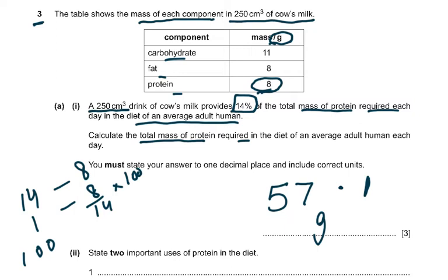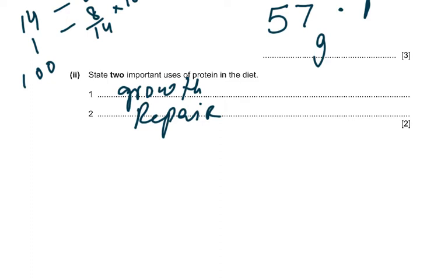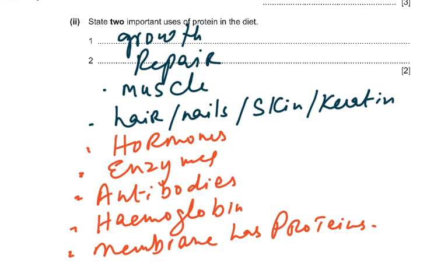State two important uses of protein in the body. There are many: growth, repair, muscles, nails and skin, hormones — remember insulin is a protein hormone but estrogen and progesterone are steroidal hormones — enzymes, antibodies, hemoglobin, collagen, and protein components of the cell membrane including channel proteins for active transport. Any two of these would get you two marks.